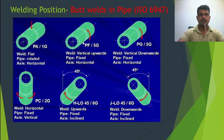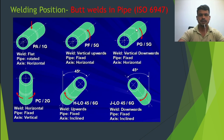The next picture shows the 5G position. The pipe is fixed and welding is vertically upwards — the welder rotates around the pipe. Compare this to 1G where the pipe is rotating and the welder is fixed. The third picture is the vertical downward, which is the PG or 5G position. So PF is vertical up and PG is vertical down — both are 5G positions.